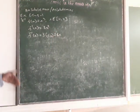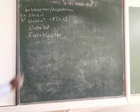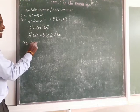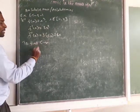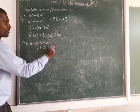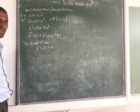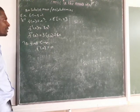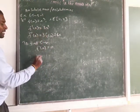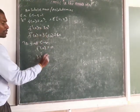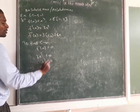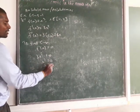Then you want to find the critical number. To find the critical number, substitute f dash of x equal to 0. If f dash of x is 3x squared equal to 0, then x squared equal to 0, so x equal to 0.